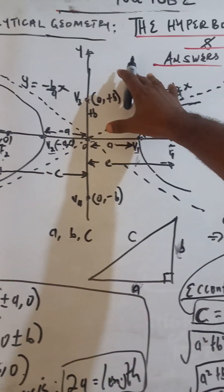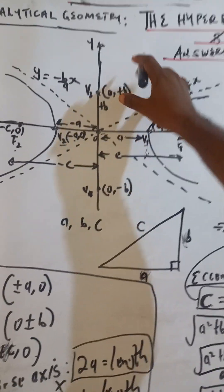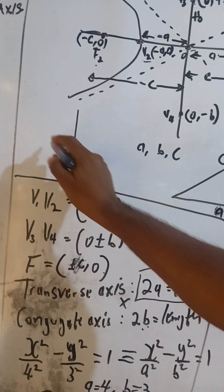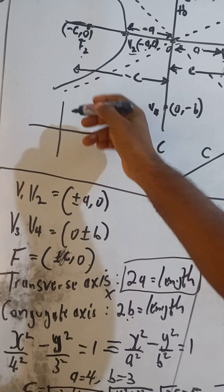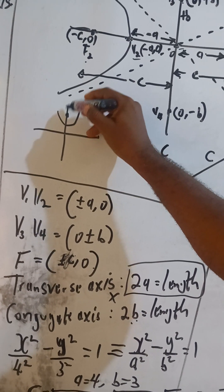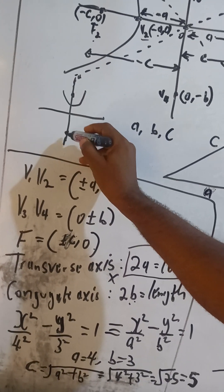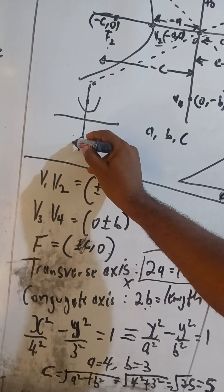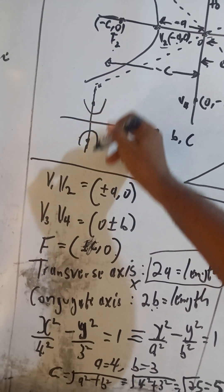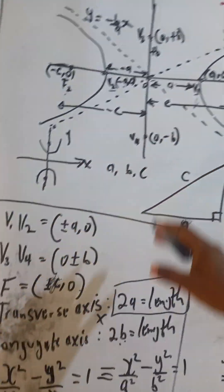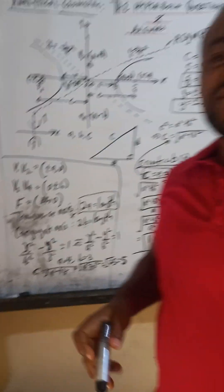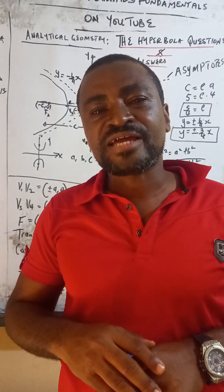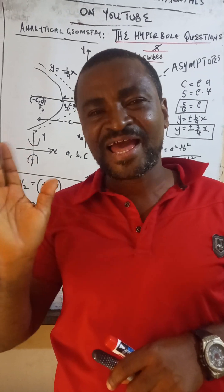This particular problem we solved is the hyperbola whose foci are located on the X-axis — the horizontal hyperbola. At times you can have a hyperbola with foci along the Y-axis — that is the vertical hyperbola. I am highly grateful for listening to this tutorial. Please kindly subscribe, like, and share my video. Have a nice day. Bye.